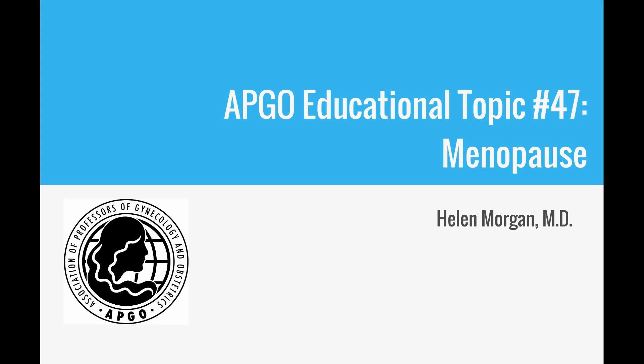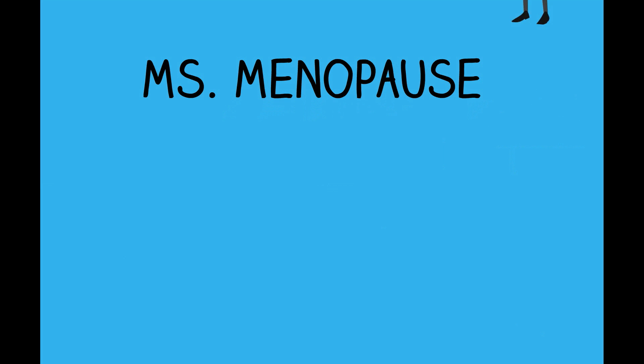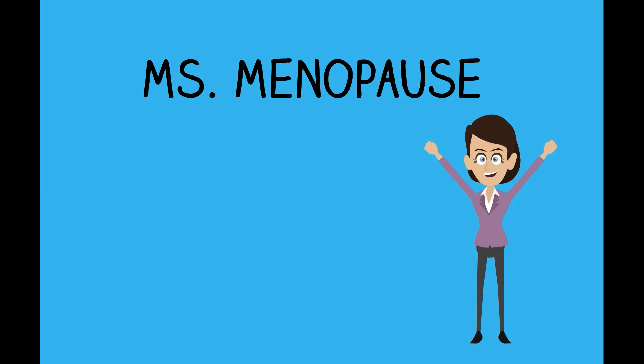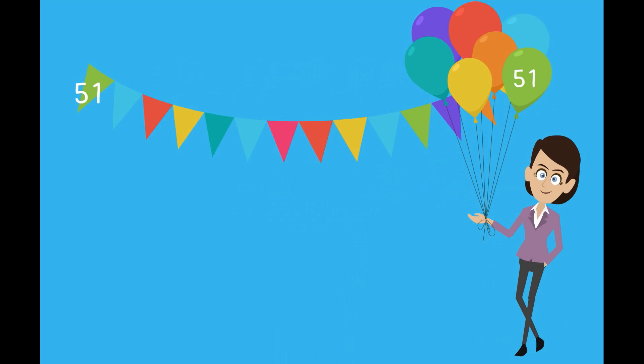APCO Educational Topic 47: Menopause. This is the story of Ms. Menopause. She has just had 12 months of amenorrhea, which by definition makes her menopausal. She is 51 years old, which is the median age of menopause in North America.